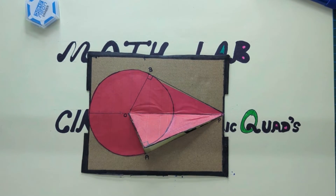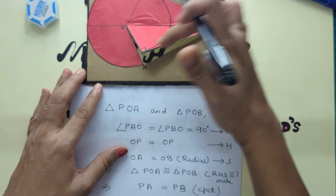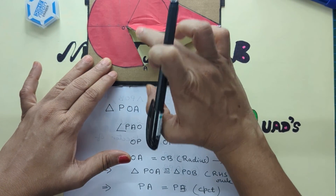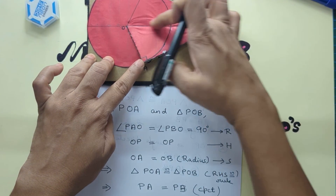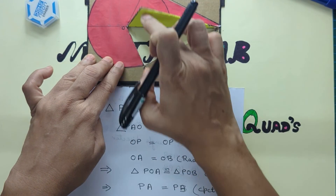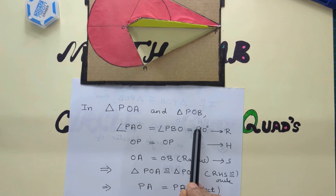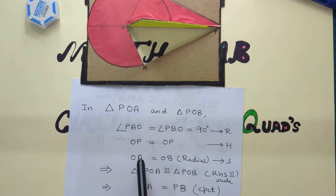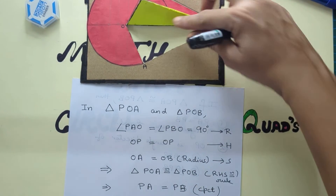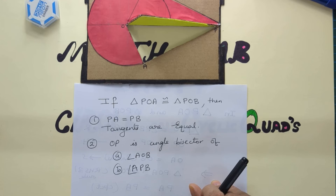The same thing can be shown by proof. We consider triangles POA and POB and look at the matching parts. The right angle is common, OP is the common hypotenuse — the side opposite the right vertex — and OA and OB are radii which are equal. The radii also perfectly superimpose. So through the RHS rule, these two triangles are congruent, and since they are congruent, we derive three properties.